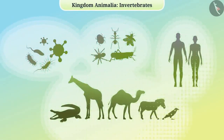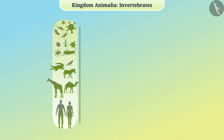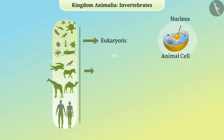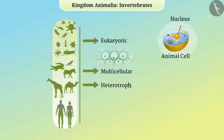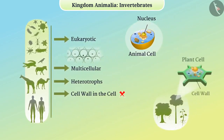Many animals are seen all around us, and classification of these is necessary for studying them. Virtually all animals are eukaryotic, multicellular, and heterotrophs. Their body is definitely made of cells, but the cells of their body do not have a cell wall like cells of the plant body.